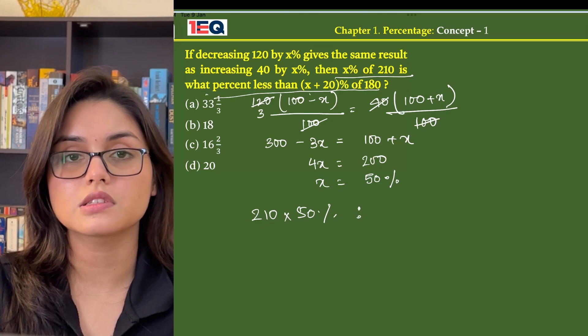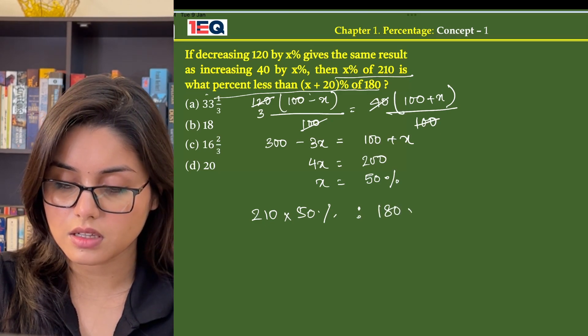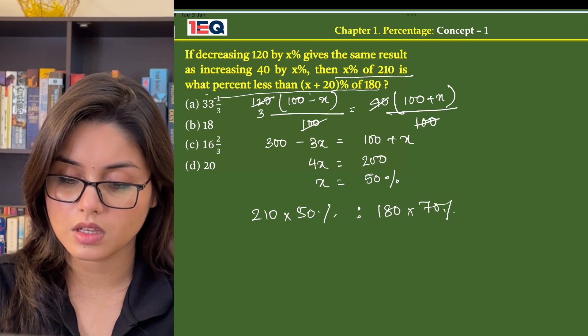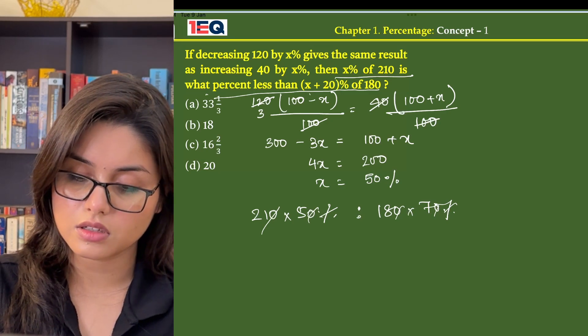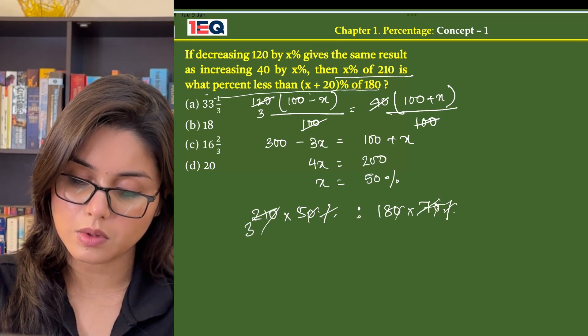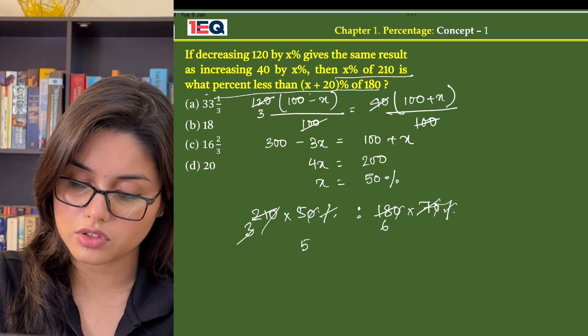x + 20 will then be 70, so 180 × 70 percent. Zeros get cancelled, percentages get cancelled. 7 × 3 is 21, 6 × 3 is 18, so the ratio is 5 to 6.